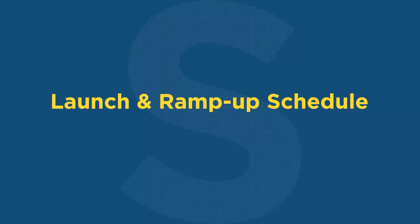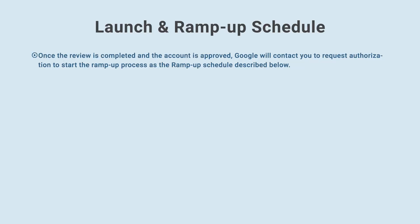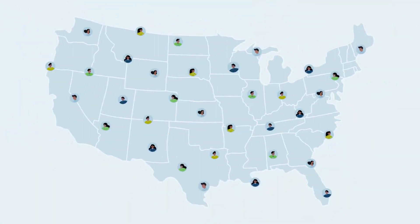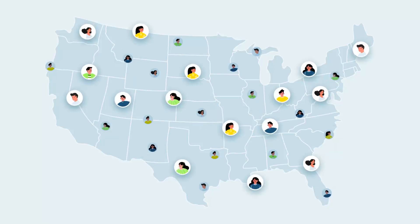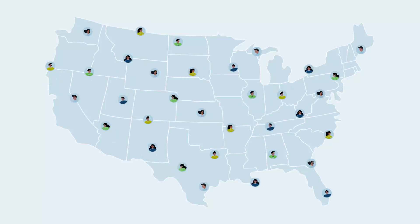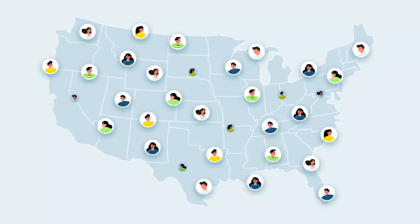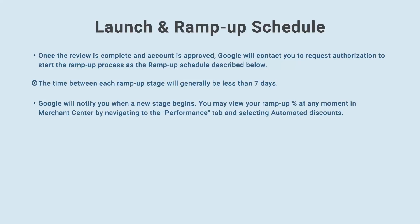Chapter 8: Launch and Ramp-Up Schedule. Once the review is completed and the account is approved, Google will contact you to request authorization to start the ramp-up process. Ramp-up schedule: First stage — discounts shown to 1% of customers. Second stage — discounts shown to 20% of customers. Third stage — discounts shown to 50% of customers. Final stage — discounts shown to more than 50% of customers. The time between each ramp-up stage will generally be less than 7 days. Google will notify you when a new stage begins. You may view your ramp-up percent at any time in Merchant Center by navigating to the Performance tab and selecting Automated Discounts.